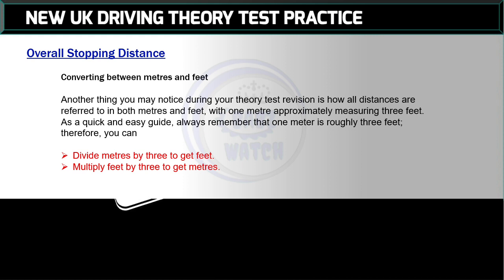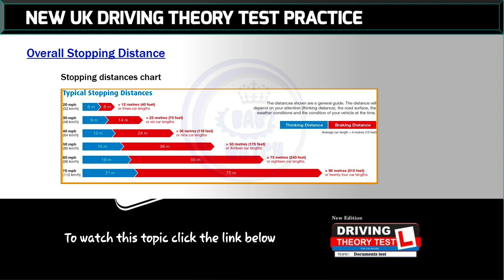Another thing you may notice during your theory test revision is how all distances are referred to in both meters and feet, with 1 meter approximately measuring 3 feet. As a quick and easy guide, always remember that 1 meter is roughly 3 feet. Therefore, you can divide meters by 3 to get feet, or multiply feet by 3 to get meters.